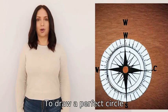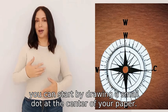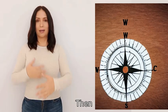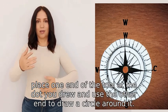To draw a perfect circle, you can start by drawing a small dot at the center of your paper. Then, using a compass or a round object like a lid, place one end of the tool at the dot.